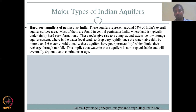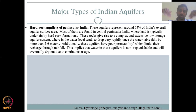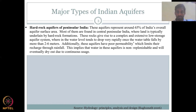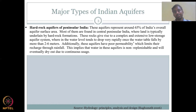Studies have noted that the water level tends to drop very rapidly once the water table falls by two to six meters — suddenly fluctuating down to very unsustainable levels. Additionally, these aquifers have poor permeability, limiting the ability of water to move through the substrate. This means limited recharge through rainfall. Natural recharge can be augmented, but still very, very little will occur.